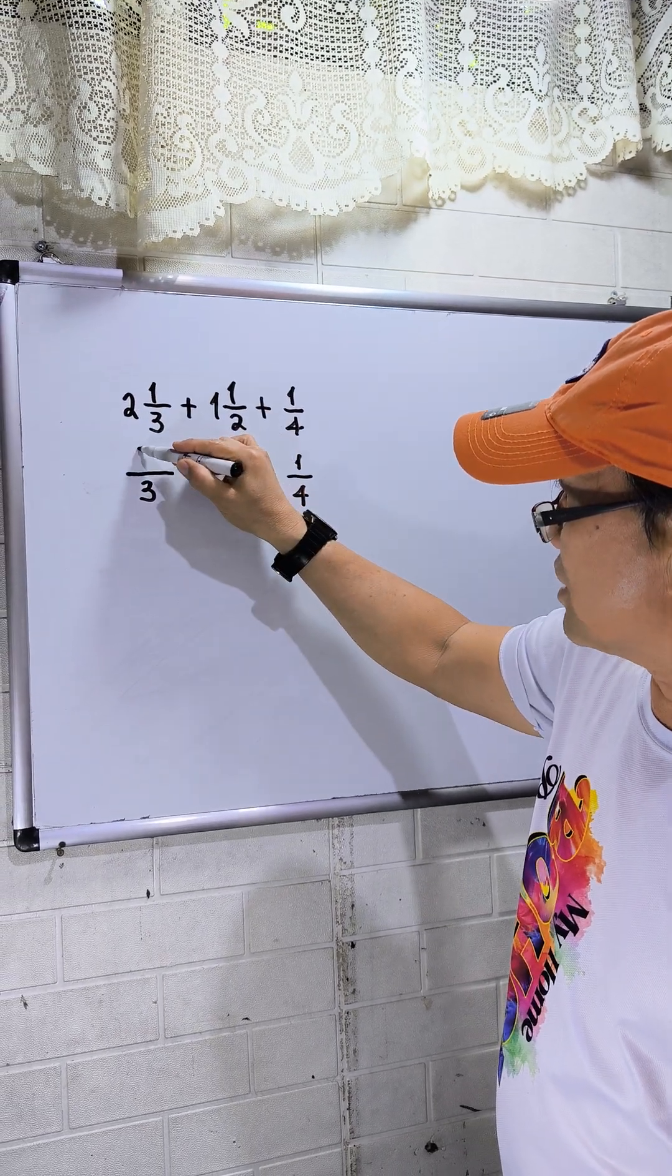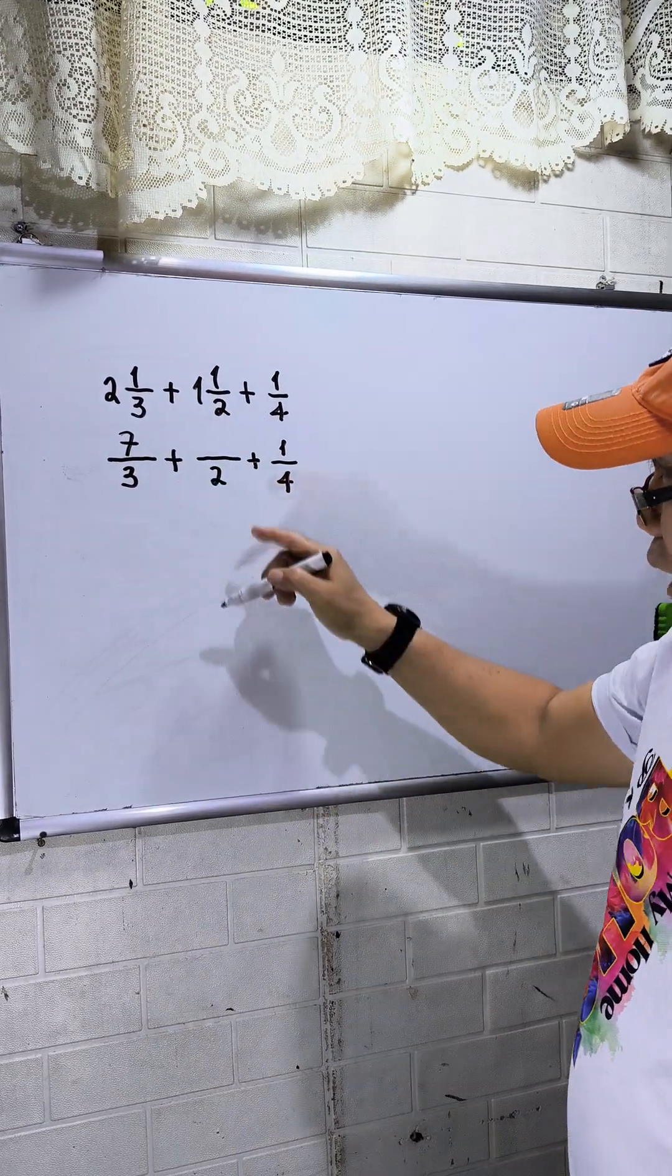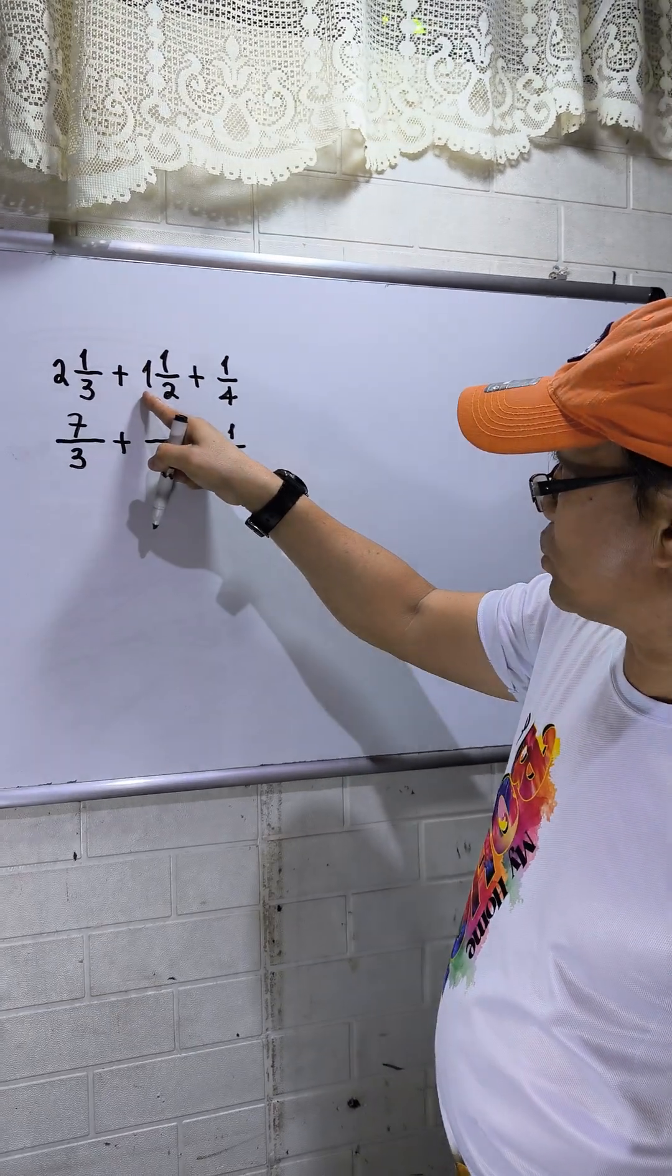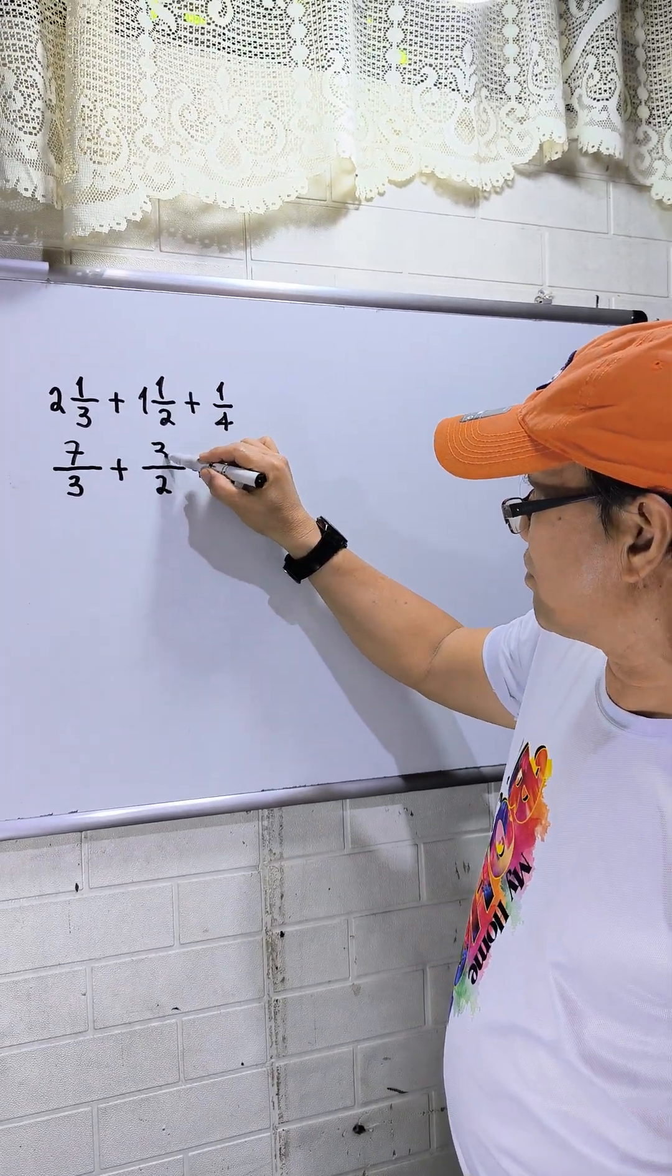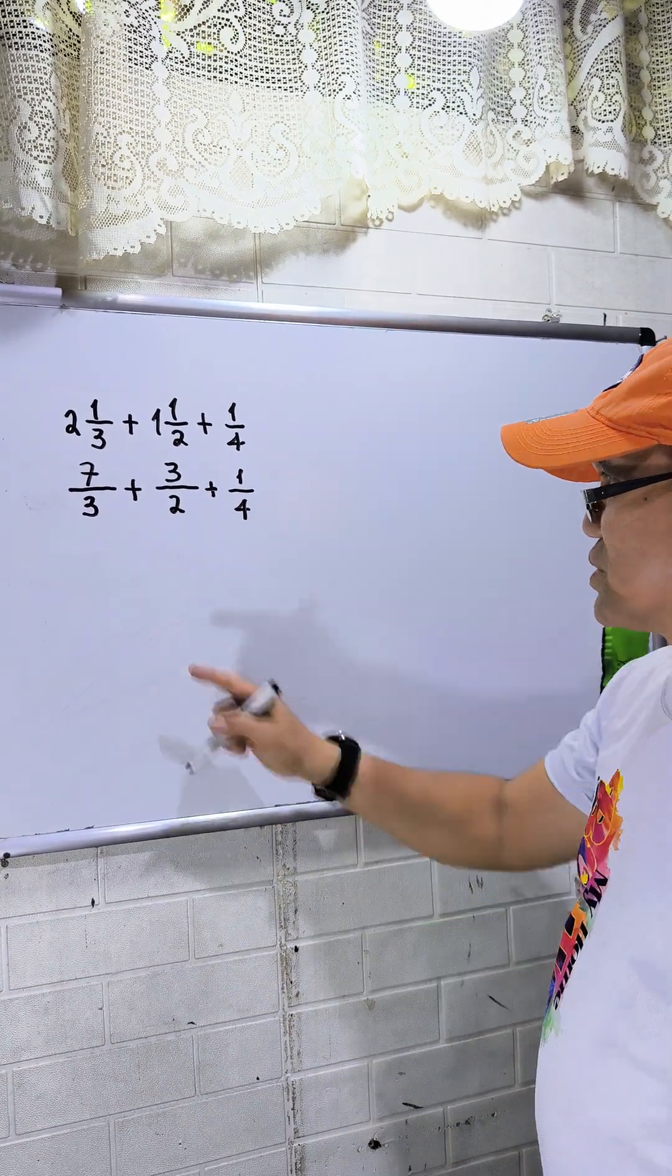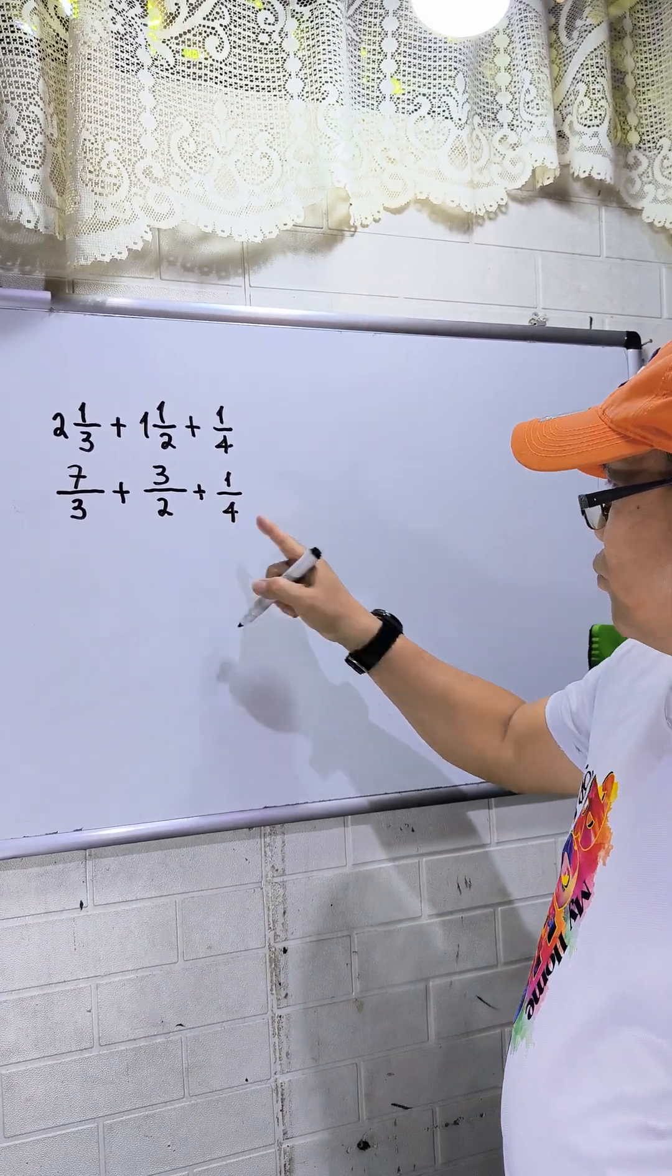The second mixed number: 2 times 1 is 2, plus 1, that is 3. So I have now 1/4. What is now the LCD between the three denominators: 3, 2, and 4?